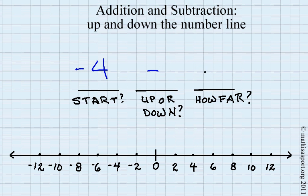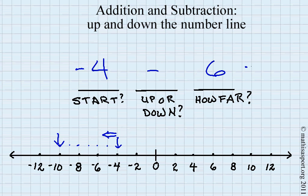Let's try negative 4 minus 6. Where do we start? We start at negative 4. Do we go up or down? We go down. How far do we go? Six: 1, 2, 3, 4, 5, 6. Our answer is negative 10.